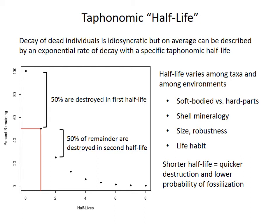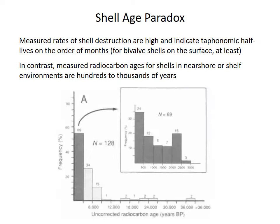Half-life can't be quantified very easily, but we can intuitively recognize that it will vary depending on whether the taxon has hard parts or soft parts, its shell mineralogy, the robustness of its shell — whether it's very thick and strong — and perhaps the life habit, whether it lives in the sediment already, the environment and the energy, and so forth. A shorter taphonomic half-life means that shells are destroyed more quickly and there's a lower probability that any of them will ultimately become fossils.